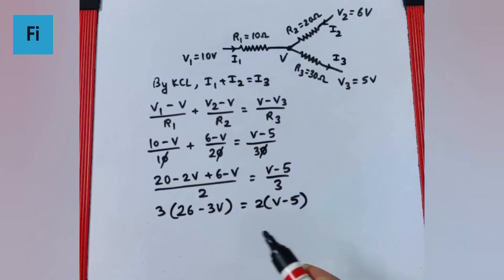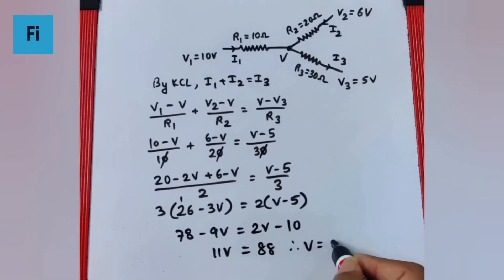Calculating: 3 times 26 is 78, minus 9V equals 2V minus 10. So 78 minus 9V equals 2V minus 10. This gives us 78 plus 10 equals 2V plus 9V, which is 88 equals 11V. Therefore, V equals 8 volts.